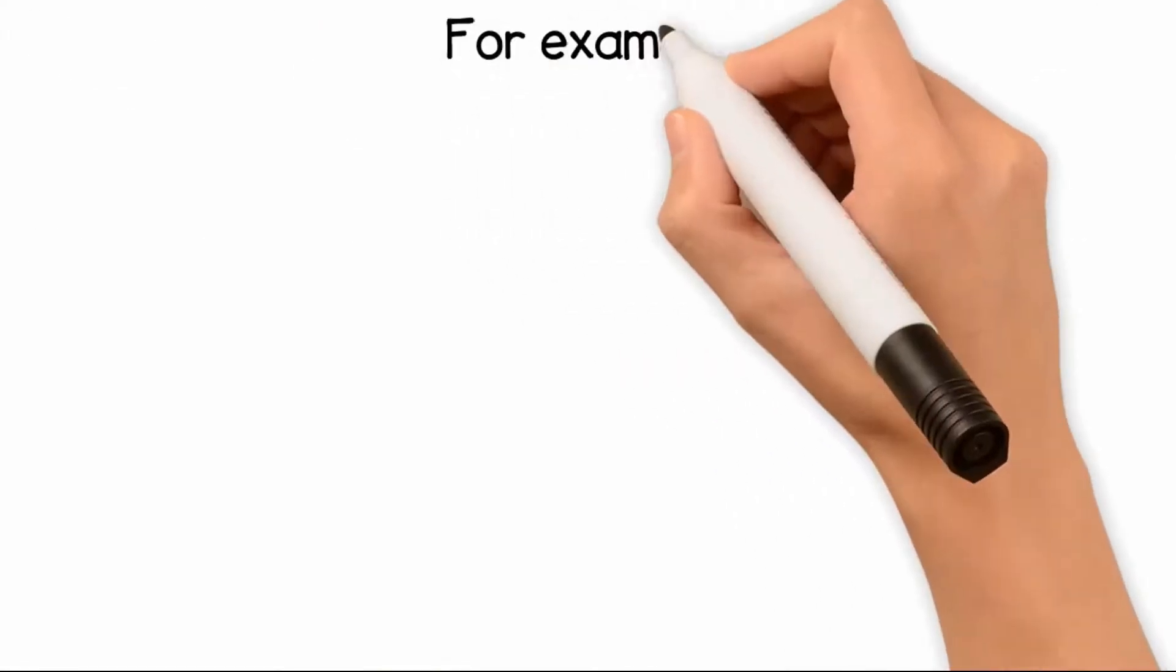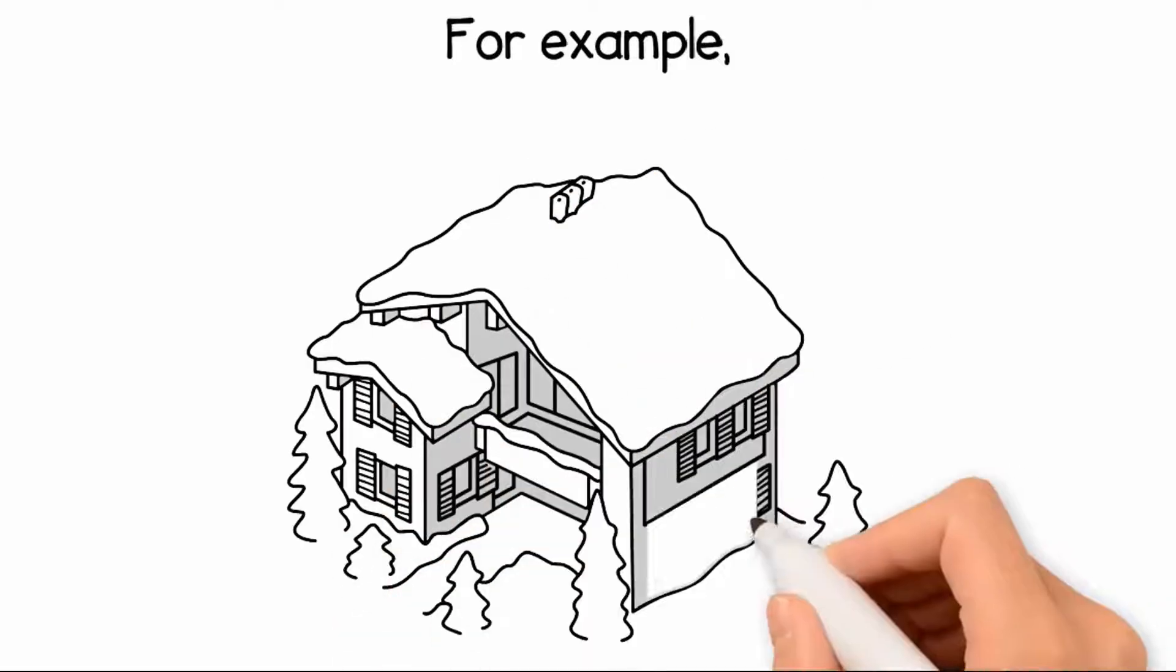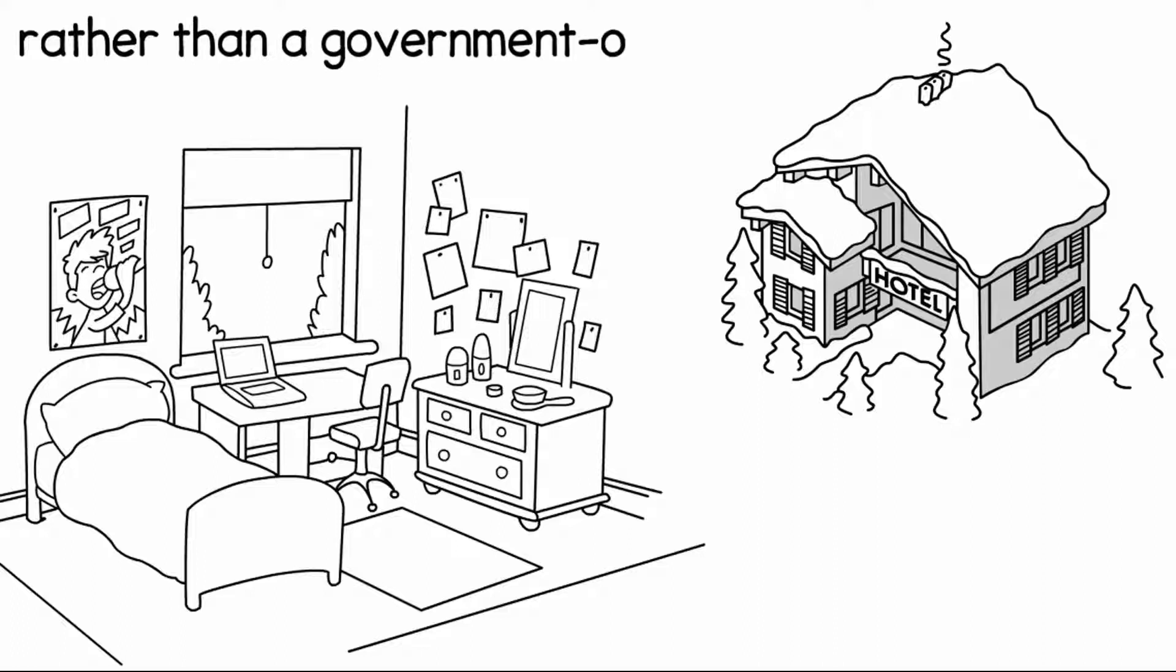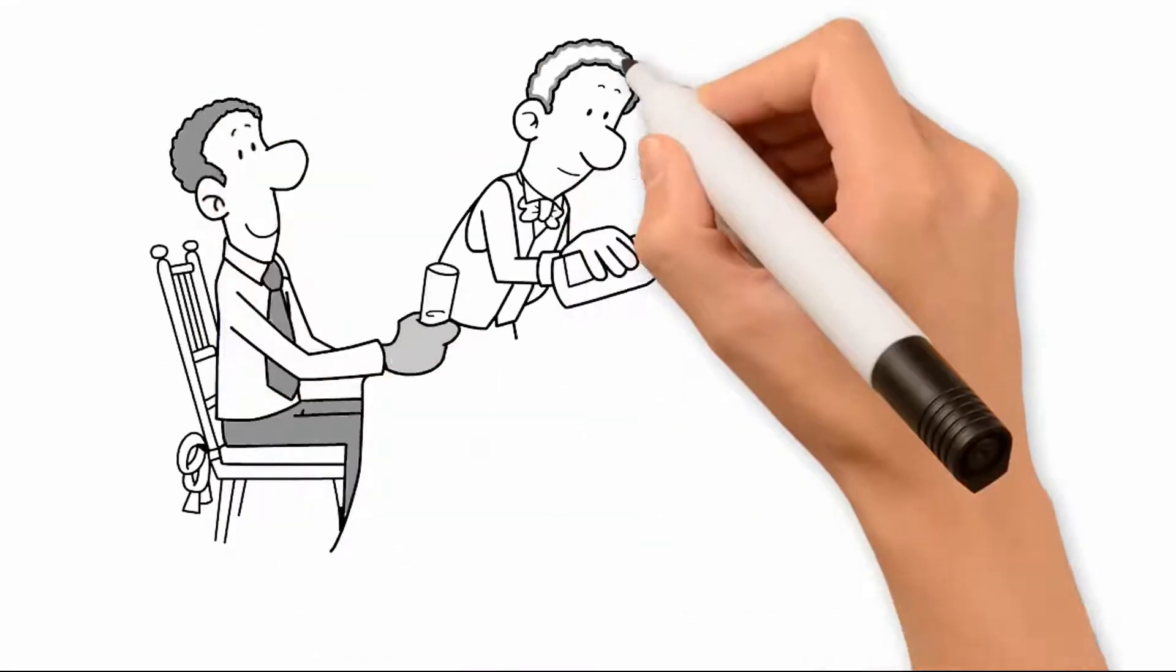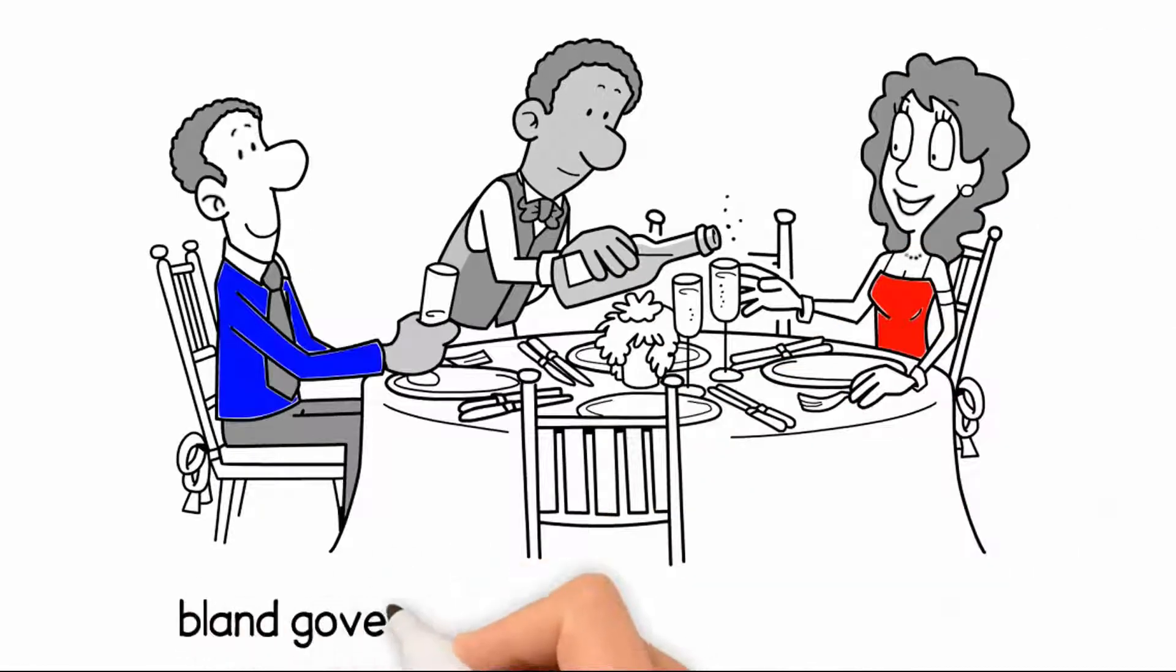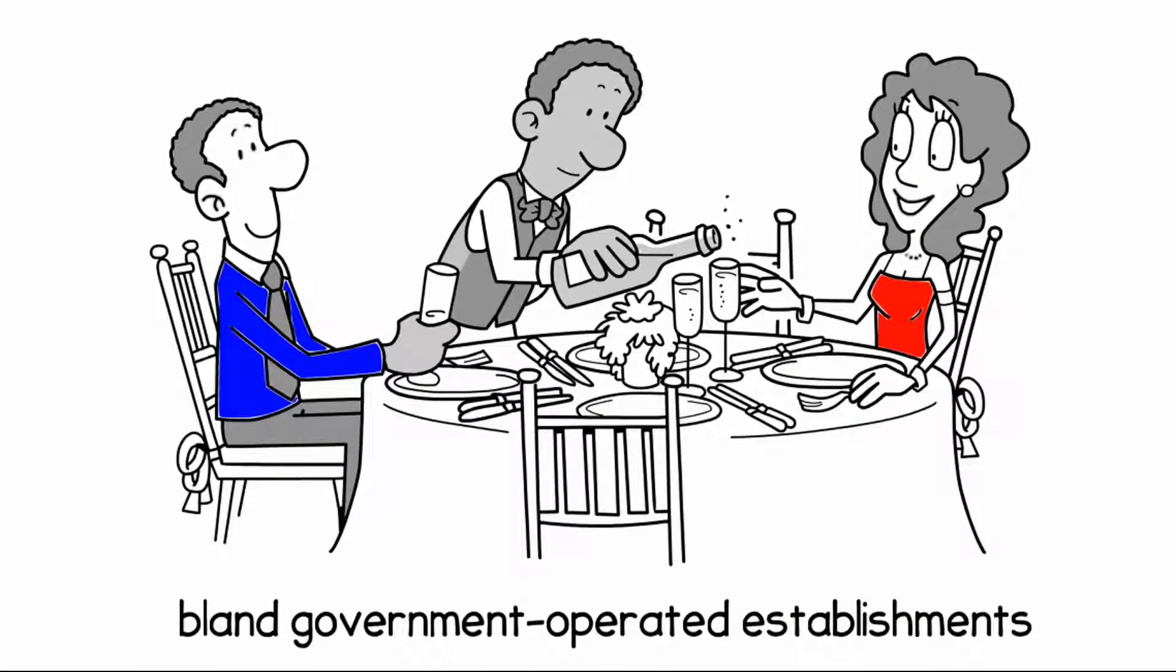For example, you will stay at a Casa Particular, a privately owned bed and breakfast, rather than a government owned hotel. You will dine at a range of paladares, privately owned restaurants, rather than bland government operated establishments.